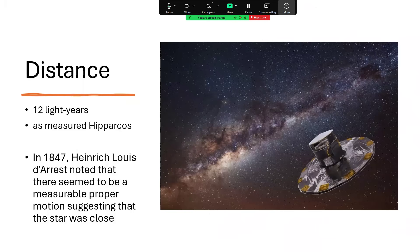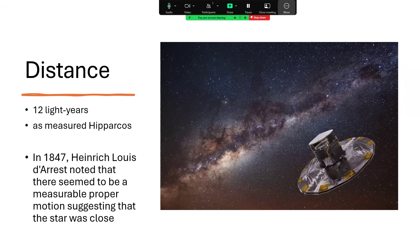The Hipparcos satellite was able to prove this was close by, just 12 light years away. And back in 1847, d'Arrest noticed that it had a very high proper motion. Its position against the other stars was changing year to year. He looked on a couple of star maps eight years apart and could tell that it had changed position. This high proper motion is typical of nearby stars, just because they are close to us. He was the first person to be onto the fact this was one of the sun's near neighbors.